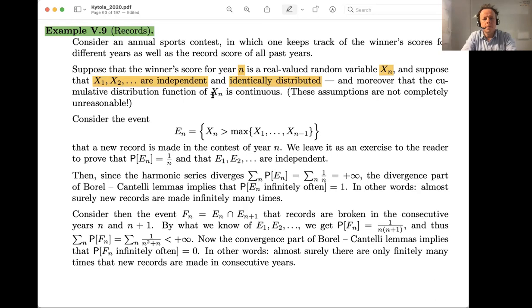We also assume that Xn has a continuous cumulative distribution function. So if we measure, for example, skiing, we measure time using a continuous, very precise measurement. So then we could look at this event. The event means that on year n, the score is better than any of the previous year's scores. So that means it is the event that the record happens on year n.